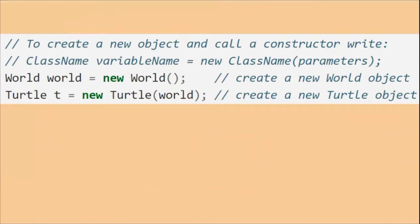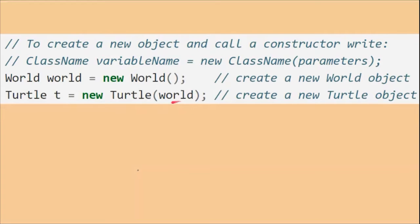This one is going to create a new world for the turtle to live in, and you have to use this constructor right here. It has parentheses in it. Constructors always have the same name as the class — so the class is called World, and the constructor has the same name. If you notice, Turtle also has the turtle constructor right here, and it's going to create a new turtle based on whatever the input is — in this case, world.